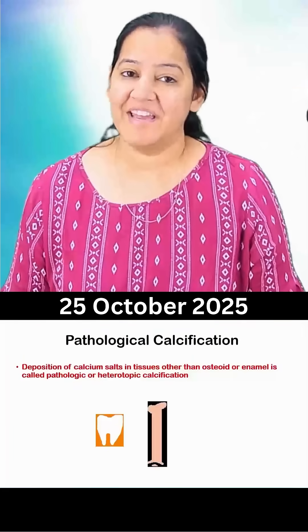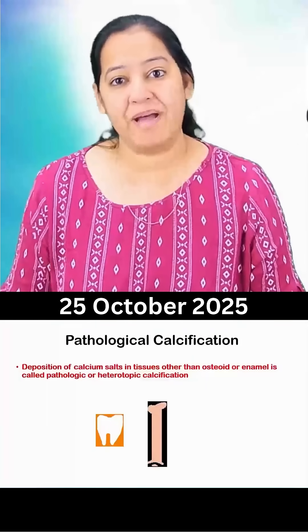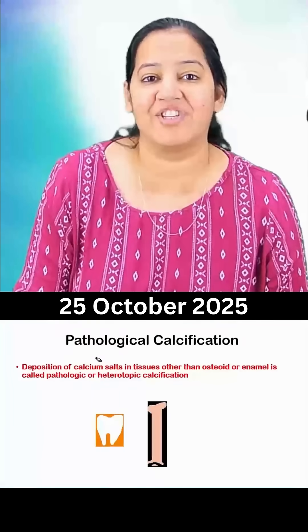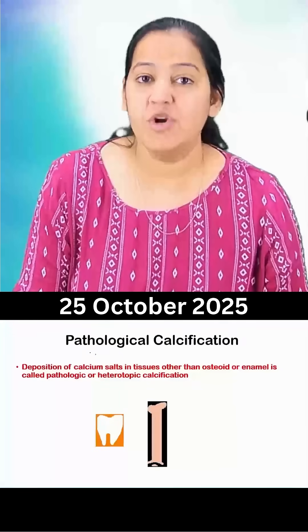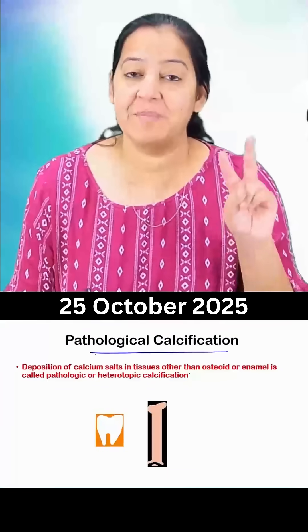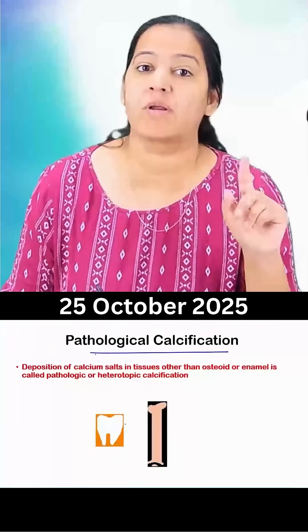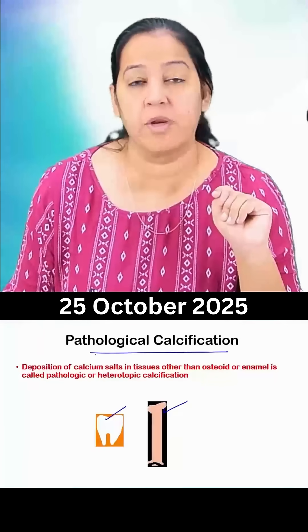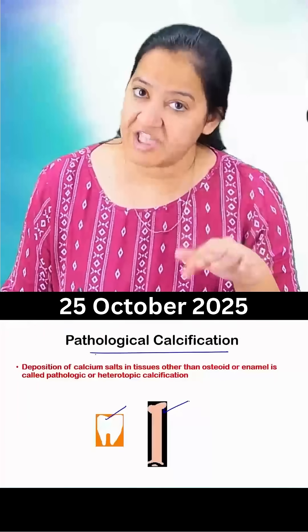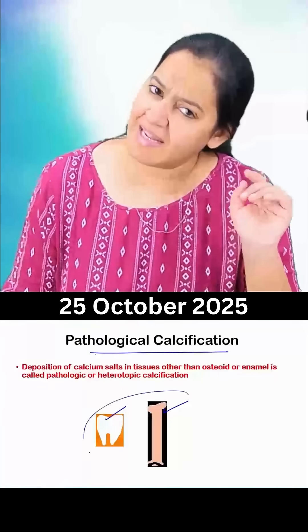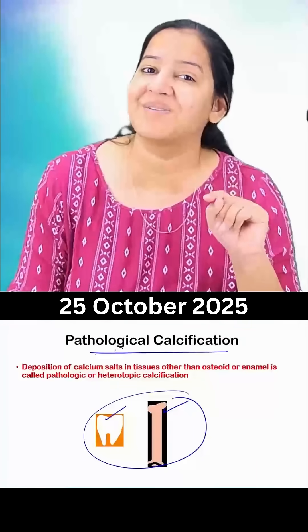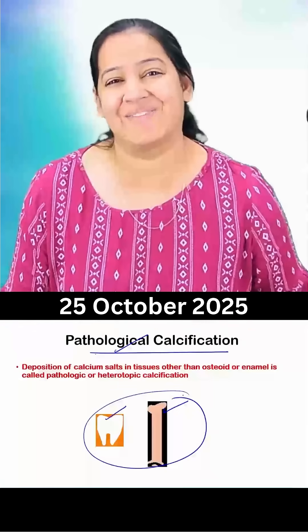Hello everyone, here I am explaining you pathological calcification. So in human body, the calcium is present in two organs: the enamel of the teeth and osteoid of the bone. If calcium is present in any other organ apart from these, it is known as pathologic calcification.